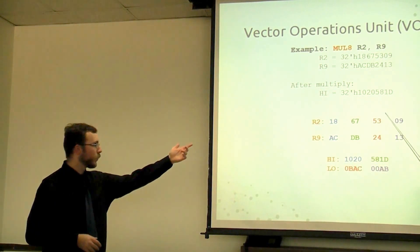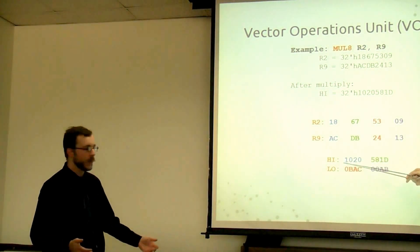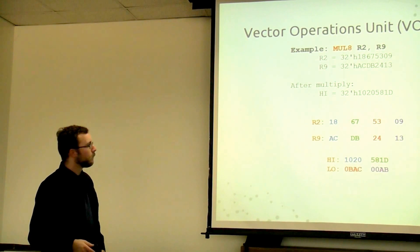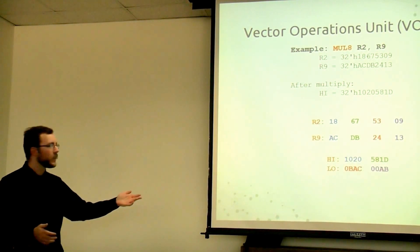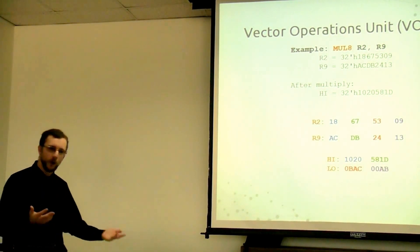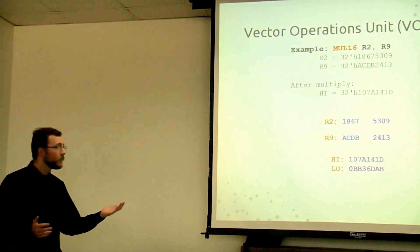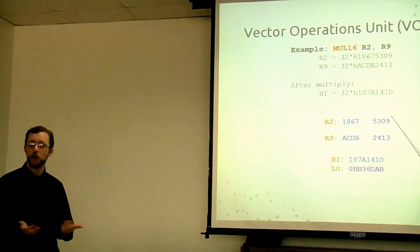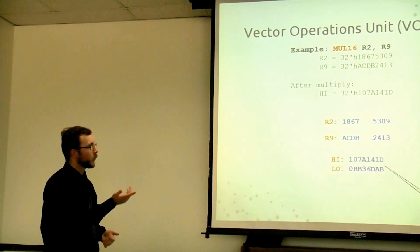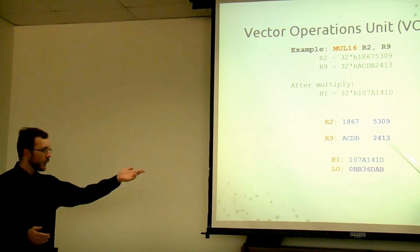It's intended to mimic the regular MIPS data path's high-low arrangement. For the 16-bit version, it works exactly the same way — 0x5309 times 0x2413 gives the expected result. The high and low are stored the same way for all operations.